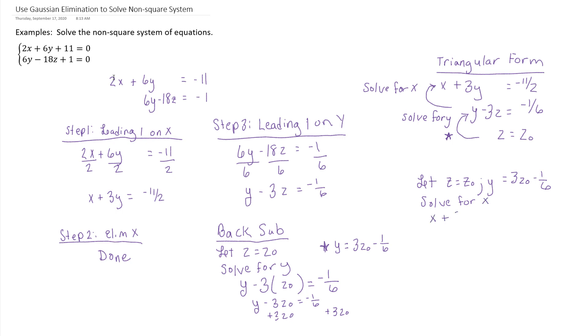We're going to use that last equation at the top there. So it's x plus 3y equals negative 11 halves. Notice I didn't write the y. In place of y, I'm going to put what y equals, which is 3z naught minus 1 sixth. Simplify, you get x plus 9z naught minus 3 sixths, which reduces to 1 half, equals negative 11 halves.